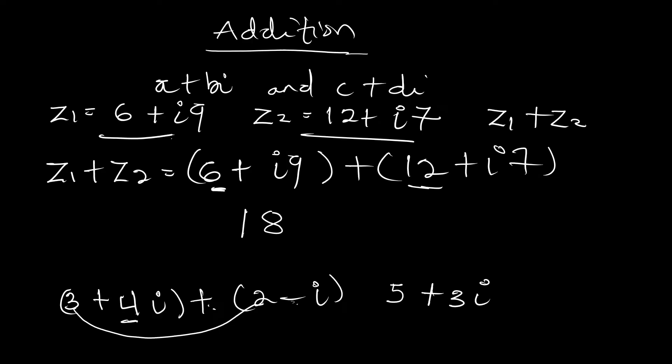The imaginary part of z1 is 9 and the imaginary part of z2 is 7, so we add them: 9+7 = 16. Therefore z1+z2 = 18+16i. This is how we add complex numbers. Now let's move on to subtraction.